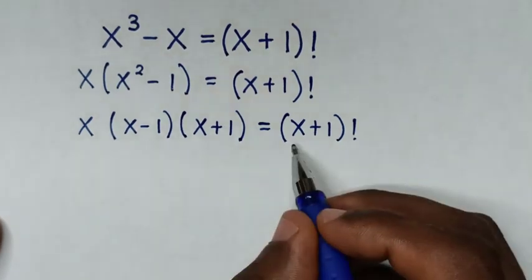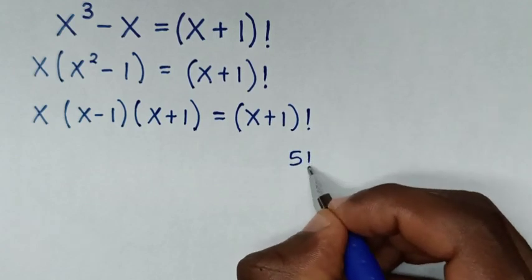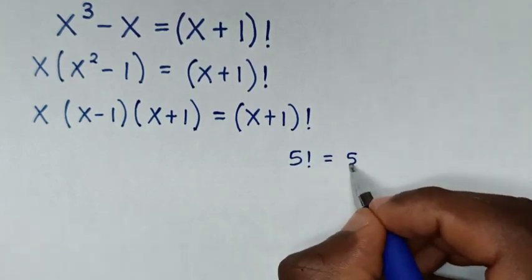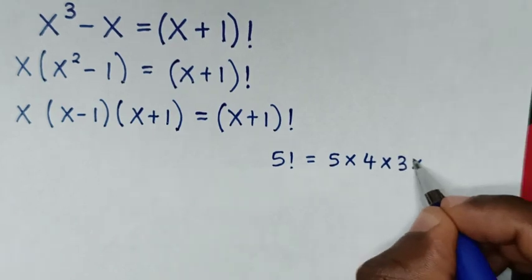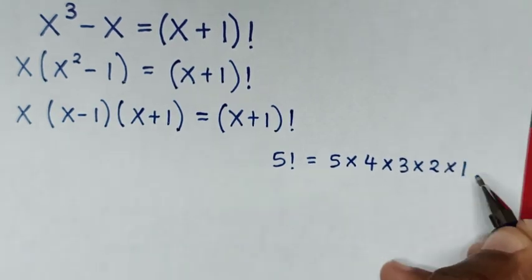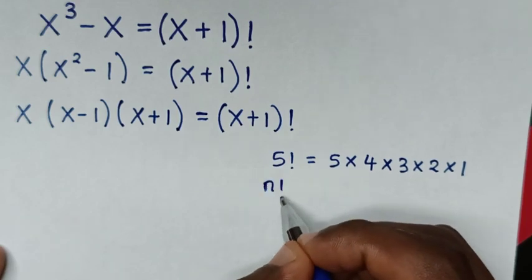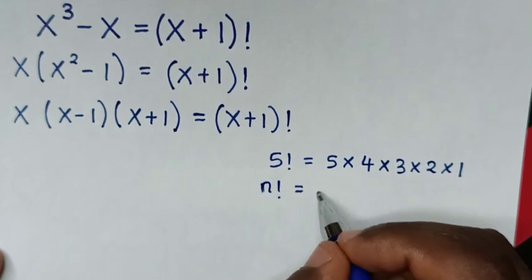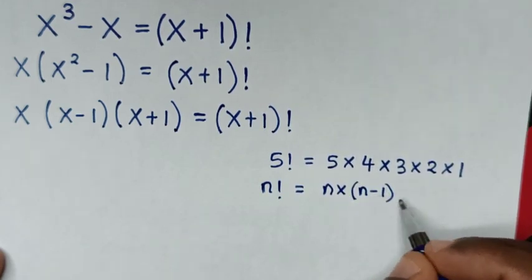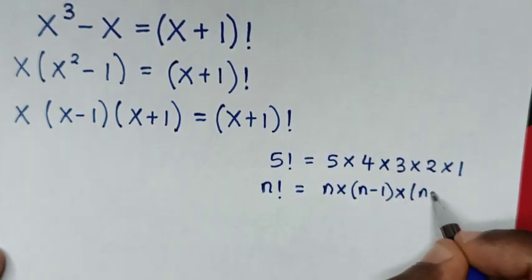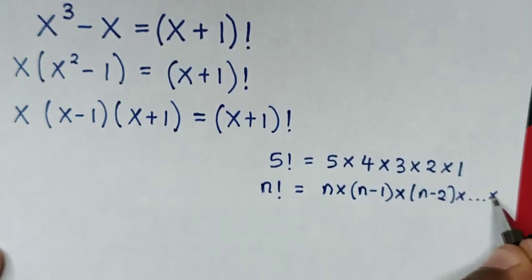Now from this factorial — for example, 5 factorial equals 5 times 4 times 3 times 2 times 1. The general formula for factorial is: n factorial equals n times (n minus 1) times (n minus 2), continuing down to times 1.